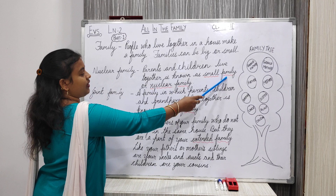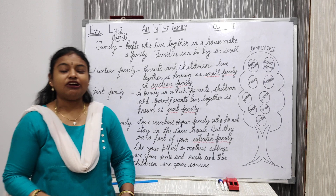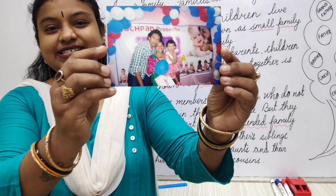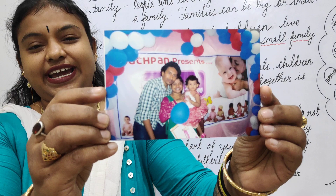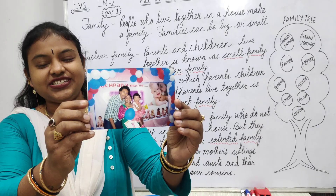I have an example to show you how the nuclear family looks like. See here — parents and children live together. This is known as nuclear family or a small family. Understood, children?